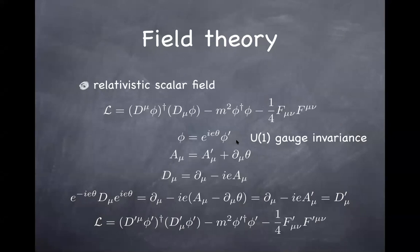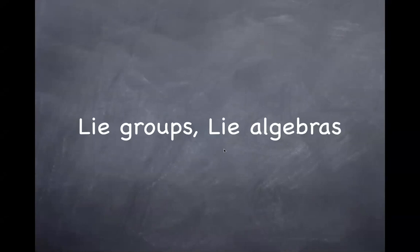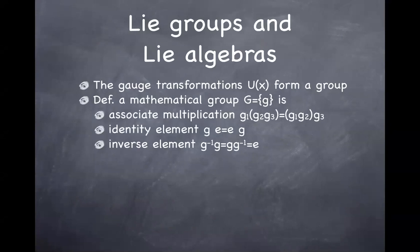It looks like I can share the slides when the slideshow is already in progress — always learning new things about Zoom. So that's the review of QED or U(1) gauge symmetry. Now we extend this to non-Abelian gauge symmetry in general. I'd like to give you a quick review of Lie groups and Lie algebras. So the transformations form a group if they satisfy three axioms of what is meant by a mathematical group.